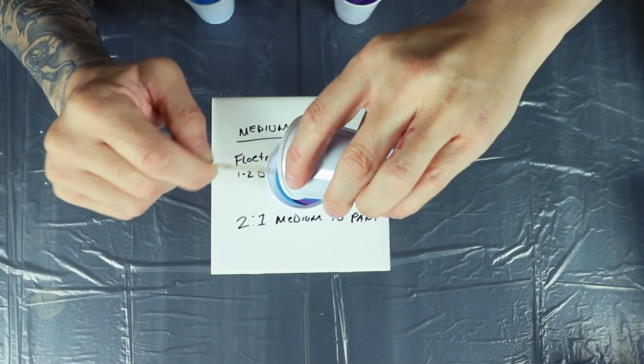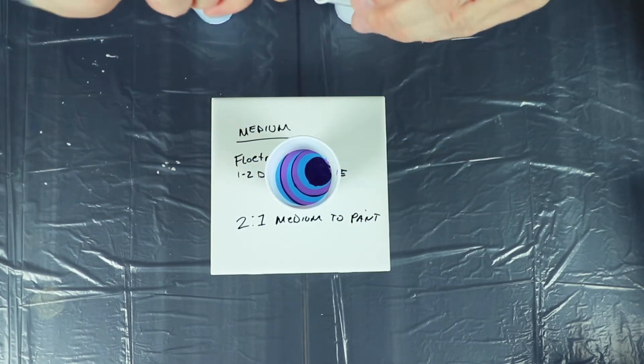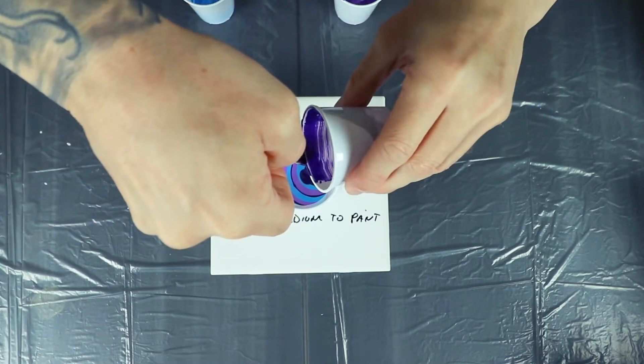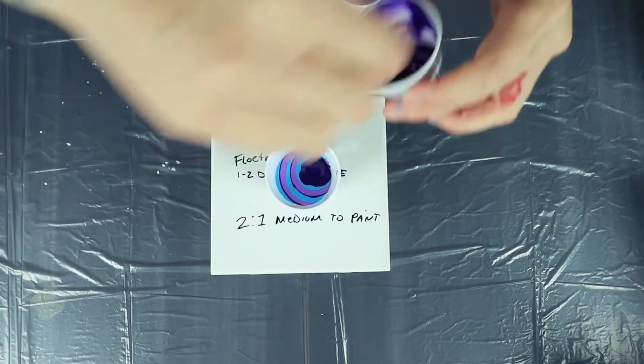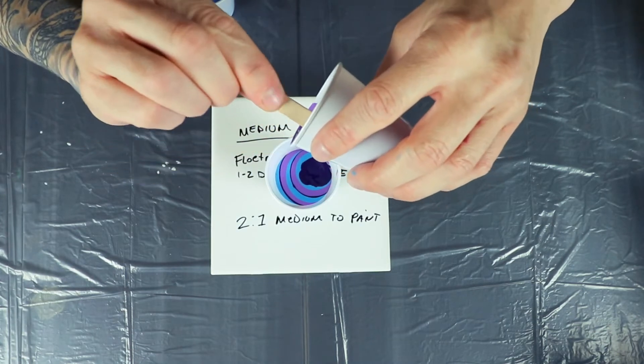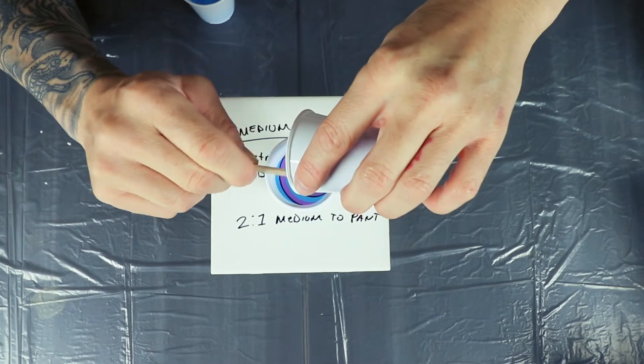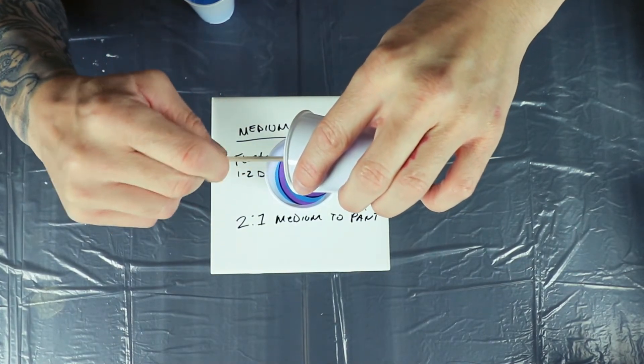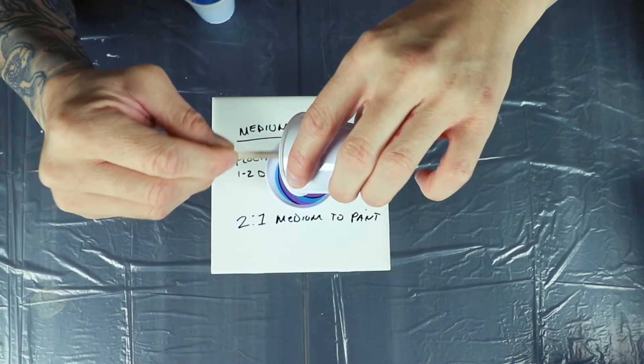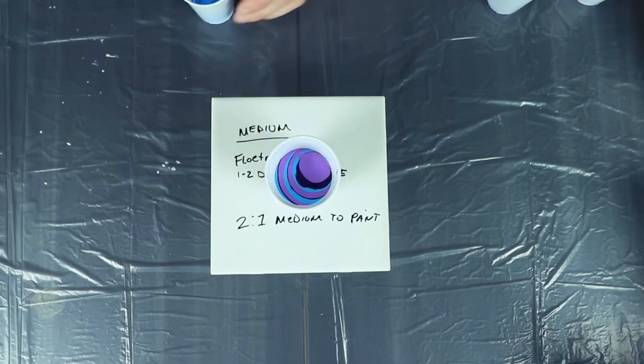So the consistency of this paint with the Floetrol, two parts Floetrol, one part paint, it's kind of a little slight bit thinner than warm honey. It'll flow off the stick, but it doesn't sink straight down into the paint. It leaves a little mound for a short period of time. But when you're doing a ring pour, you do want your paints to be a little bit thicker, because if they are too thin, then they tend to mix when you're pouring.